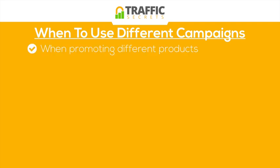If you have different products in your business — more than one product — at a minimum you'd want a campaign for each of those products if you're going to drive traffic from AdWords. It's just a better way to structure it. You want to use a naming convention so you can track everything in your reports and see which product was being promoted in that campaign.